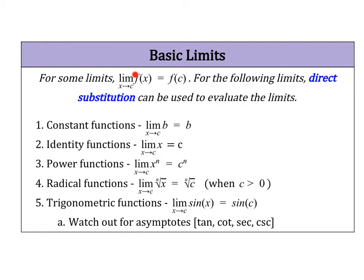So you can see that the limit of f of x as x approaches c is just f of c. A few basic limits to be aware of: the limit of constant functions — the limit of 2 or the limit of negative 5 — is always just going to be whatever your constant is, regardless of what x is approaching, because we have that horizontal line. For identity functions like x, we just do direct substitution: the limit of x as x approaches c is just c.